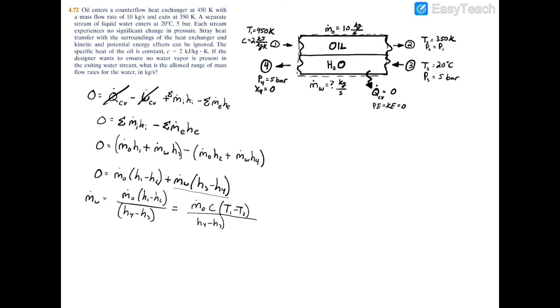Now we're going to divide this whole thing by h4 minus h3, and I'm going to leave them as that just because we have plain old water which we can easily get from the property table.